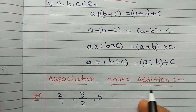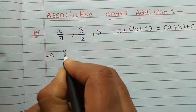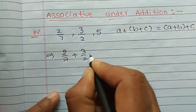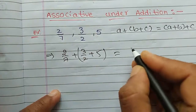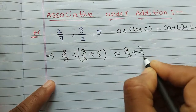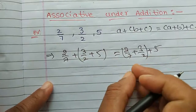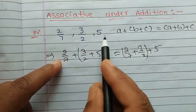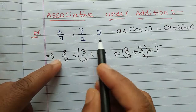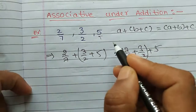So first, let's check associative property under addition. For example, take the numbers 2/7, 3/2, and 5. So (2/7 + 3/2) + 5 equals 2/7 + (3/2 + 5). Note that 5 is also a rational number since 5 = 5/1.